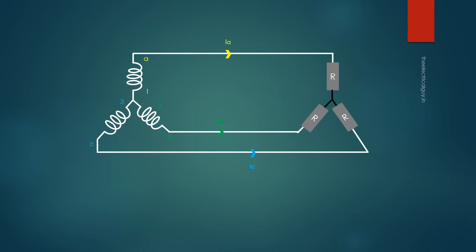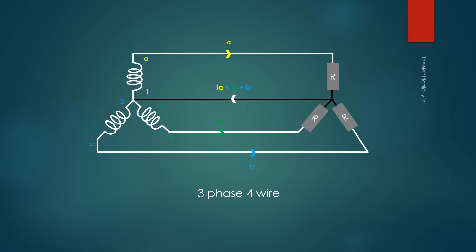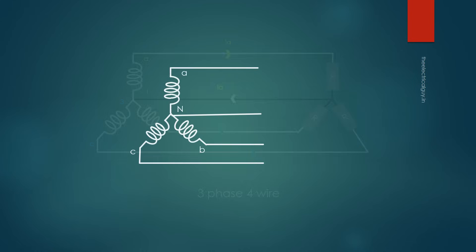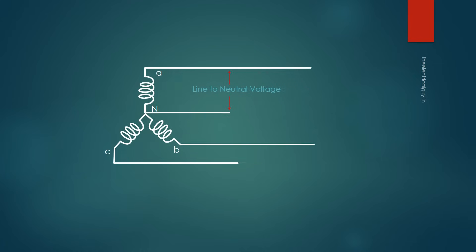The circuit with three wires is called a 3-phase 3-wire system, and the generator and load are said to be connected in Y or star. The circuit with a neutral is called a 3-phase 4-wire system, and is widely used to supply power to commercial and industrial customers. When discussing a star-connected 3-phase system, there are two key concepts: line-to-line voltage and line-to-neutral voltage. The relationship between these voltages and currents changes with the type of connection.